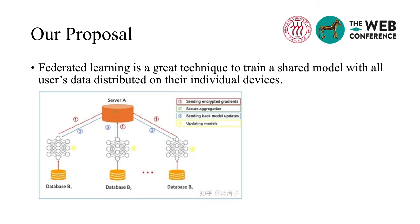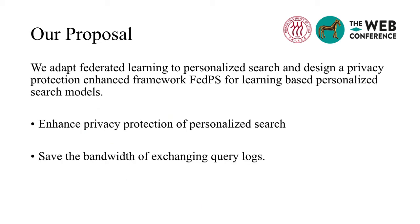Federated learning is a great technique to train a shared model with all users' data distributed on their individual devices. It maintains a global model on the central server. Each client trains the global model with local data and sends the model update to the server to improve the current global model. To train a shared high-quality personalization model with query logs distributed on all users' devices, we adapt federated learning to personalized search and design a privacy-protection-enhanced framework FedPS. With this framework, we enhance privacy protection of personalized search and save the bandwidth of exchanging query logs.